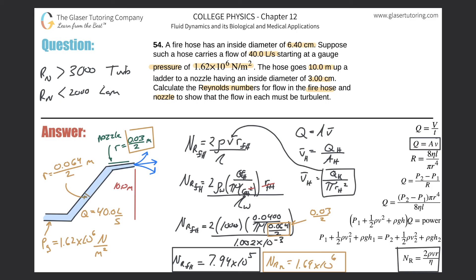As a challenge, try to solve this problem assuming the 40 liters per second is the flow rate without the nozzle attached. In that case, attaching the nozzle would change the flow rate, and you'd need to consider other formulas. See how far you can get. Thanks for tuning in — please subscribe, and I'll see you next time.